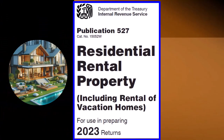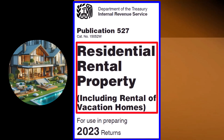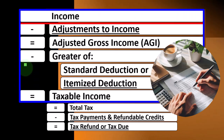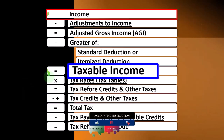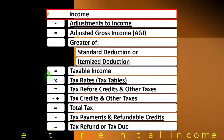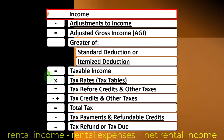This information can be found in Publication 527, Residential Rental Property, including Rental of Vacation Homes, Tax Year 2023, available on irs.gov. Looking at the individual income tax formula, we're on line one — income. In the first half of the formula, it's basically a funny income statement: income minus deductions, resulting in taxable income. Rental property, typically reported on Schedule E, has an income statement format — rental income minus rental expenses, resulting in net rental income.